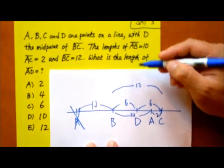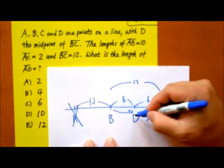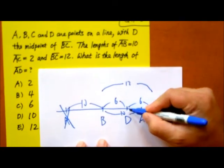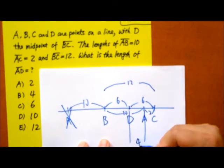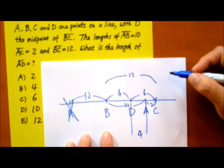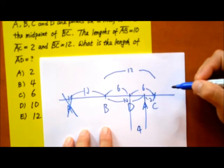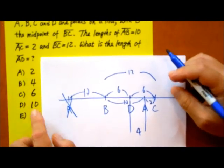He's asking for the length of AD. Since this is 10 and this is 6, this length has to be 4, and this is 2. 4 plus 2 is 6, so the answer is 4.